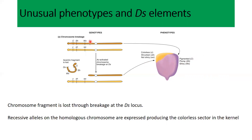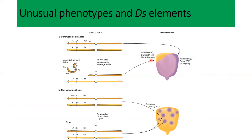When only the recessive forms of these alleles are present, different phenotypes result. For example, the recessive form of Wx gives seeds that are not shiny — they are shrunken and colorless. Due to the presence of the Ds element, the chromosomal arm is broken, and it carries the dominant forms of these alleles away. Ultimately, the recessive alleles become active and give rise to colorless, shrunken, and non-shiny seeds.